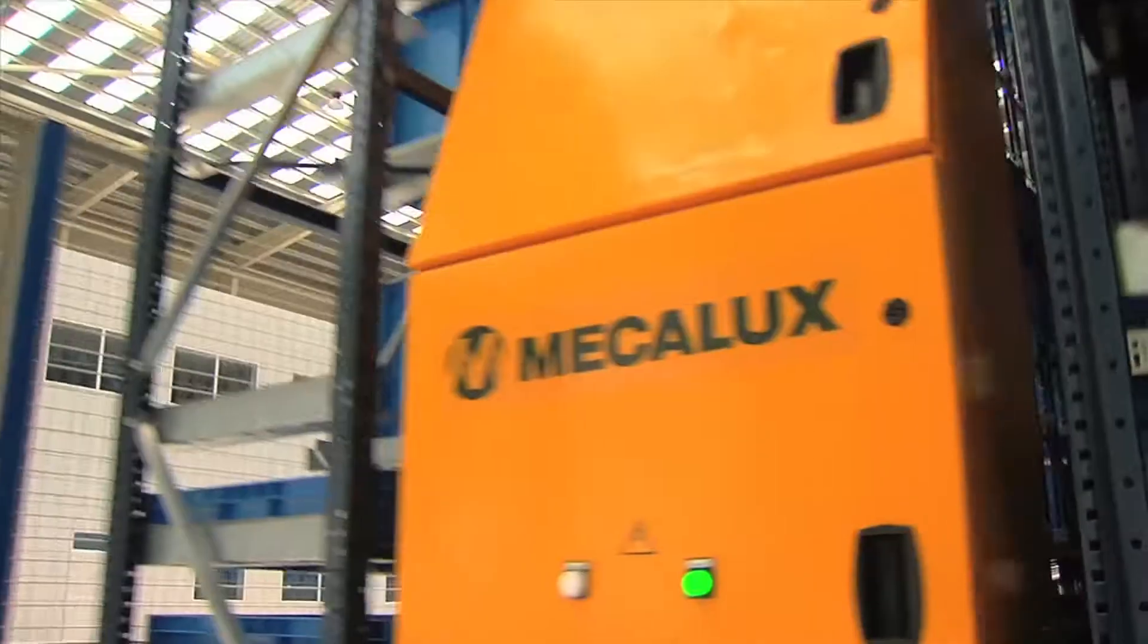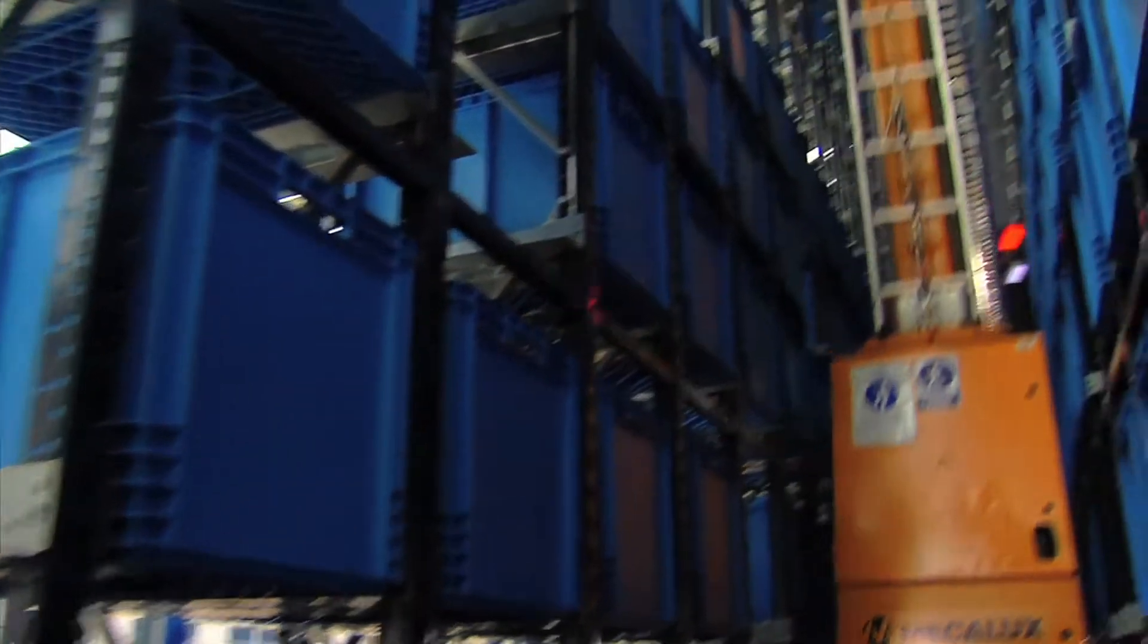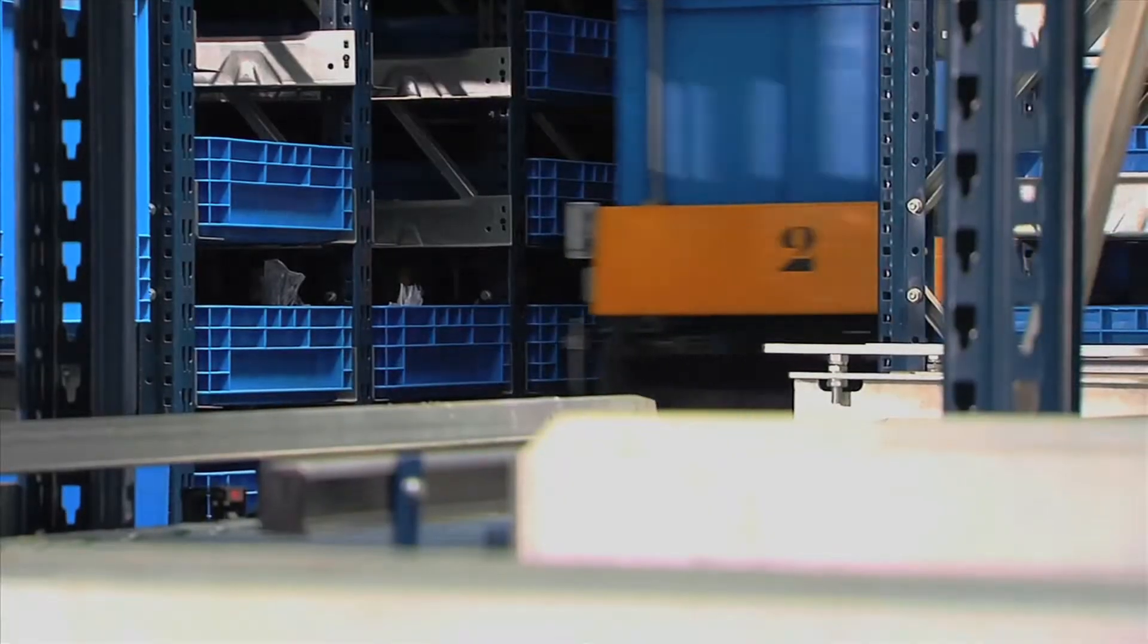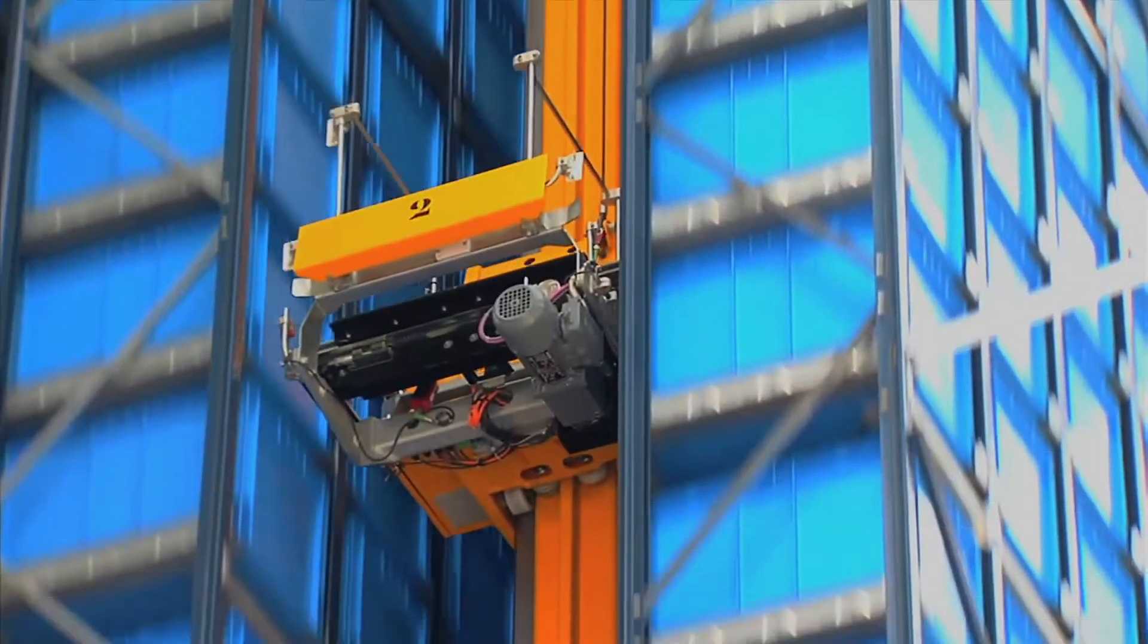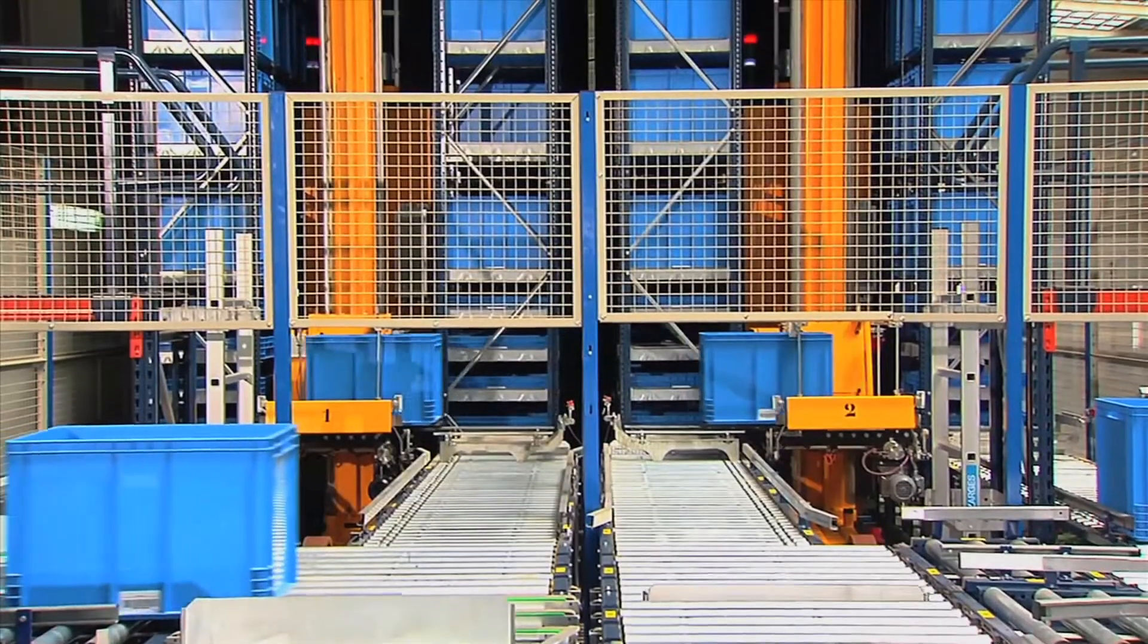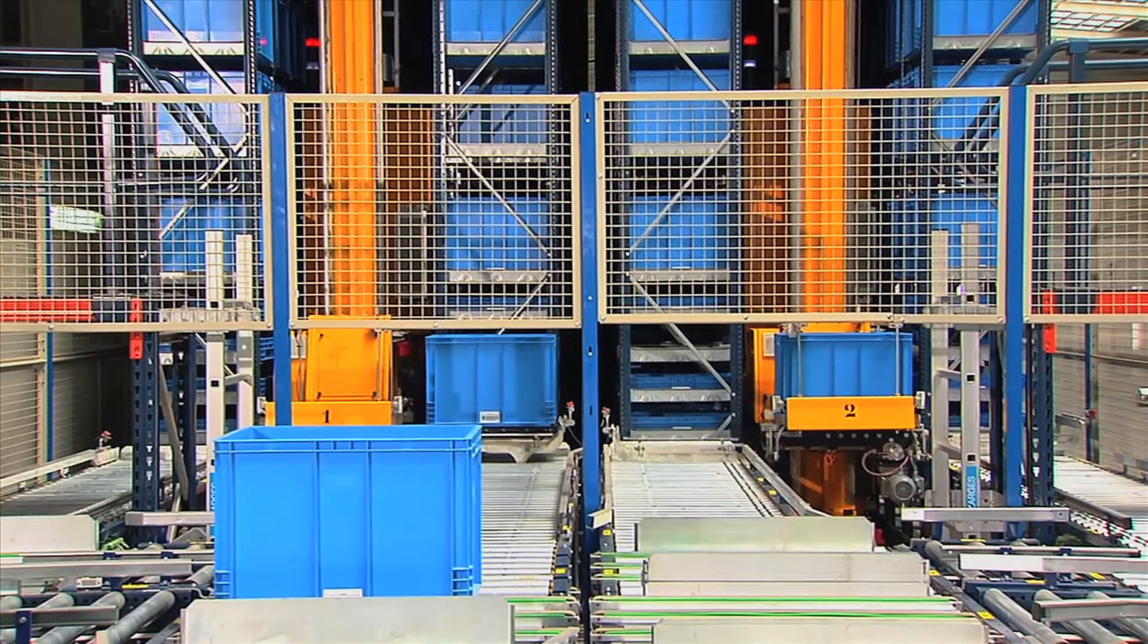In the case of Knockin, another of the companies of the Porcelanosa Group, which stores small products as a manufacturer of taps and bathroom units, Mecalux designed an automatic warehouse for boxes instead of pallets. A solution that provides greater agility in goods input and output.